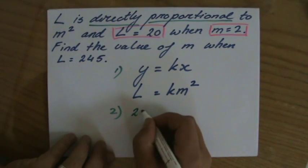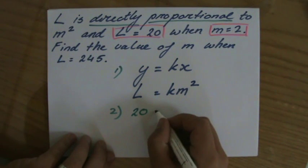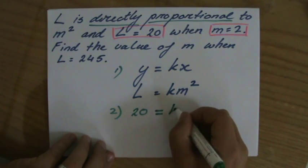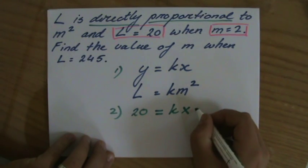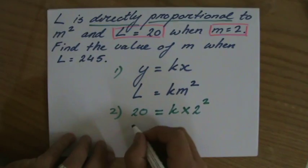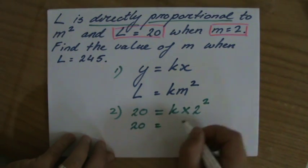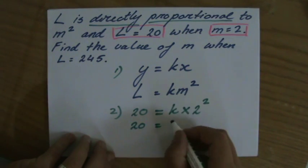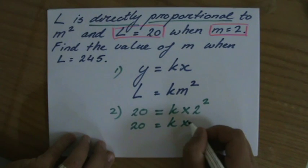L is 20, I'm doing it in green. And that equals k times when m is 2, 2 to the power 2. So 20 equals 2 times 2 is 4, k times 4.